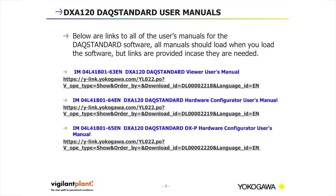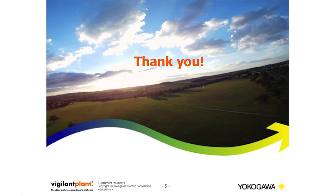Below are the links to all the user manuals for the DAX Standard software. All manuals should load when you load the software, but links are provided in case they are needed. The links are: DxA120 DAX Standard Viewer User Manual, DxA120 DAX Standard Hardware Configurator User Manual, and DxA120 DAX Standard DXP Hardware Configurator User Manual.